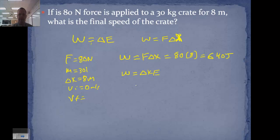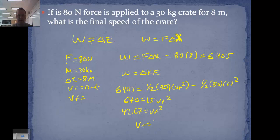Now the type of energy that's changing here is kinetic energy. So the 640 joules will be equal to one-half the mass, 30 kilograms, times the final velocity squared, minus one-half 30 times zero squared. So 640 equals 15 v final squared. 42.67 equals v final squared. v final will be the square root of 42.67, which is 6.53 meters per second. So that's a case of a work kinetic energy change in energy.